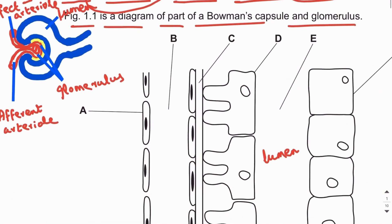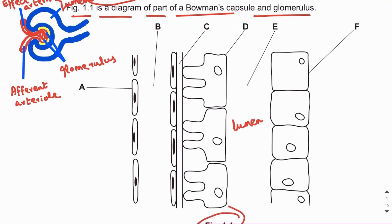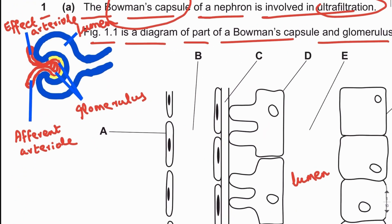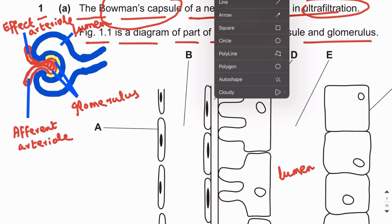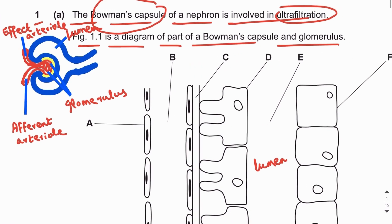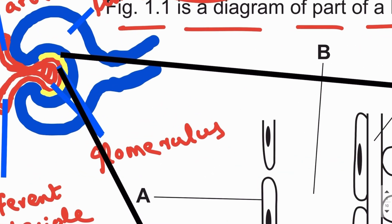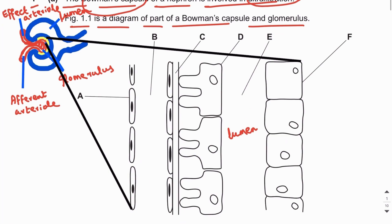Figure 1.1 is basically a zoomed-in part of the diagram we have just seen — showing the glomerular capillary, the basement membrane, and the podocytes.